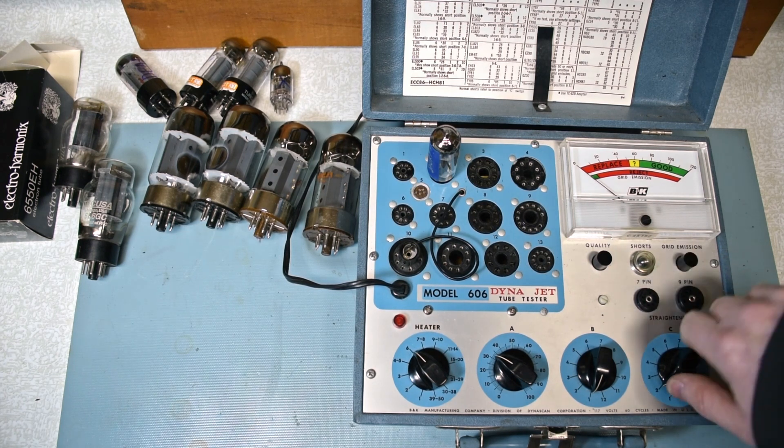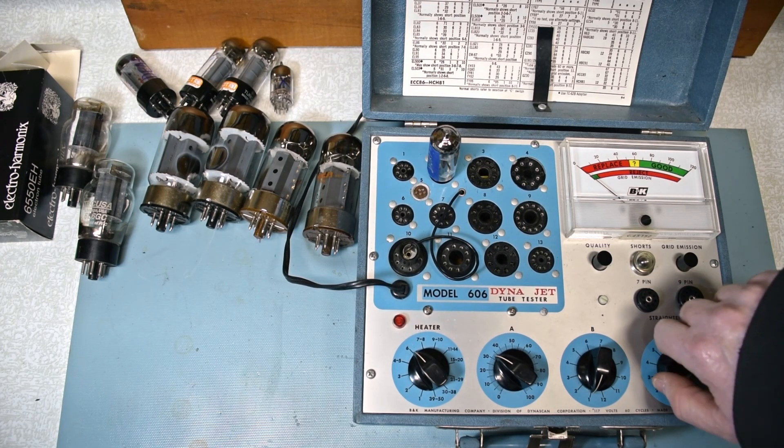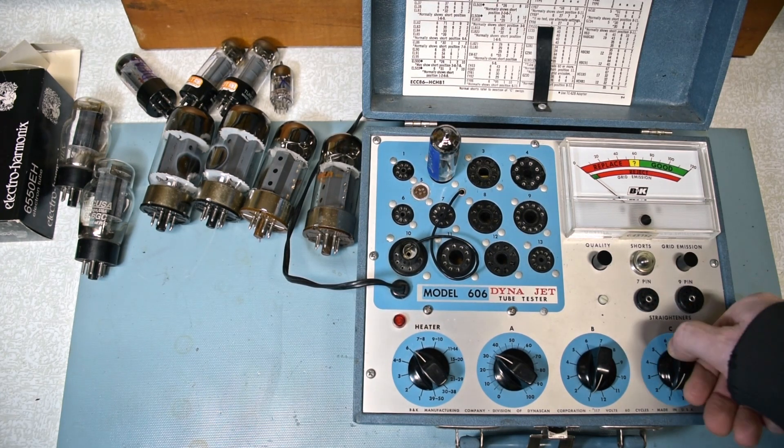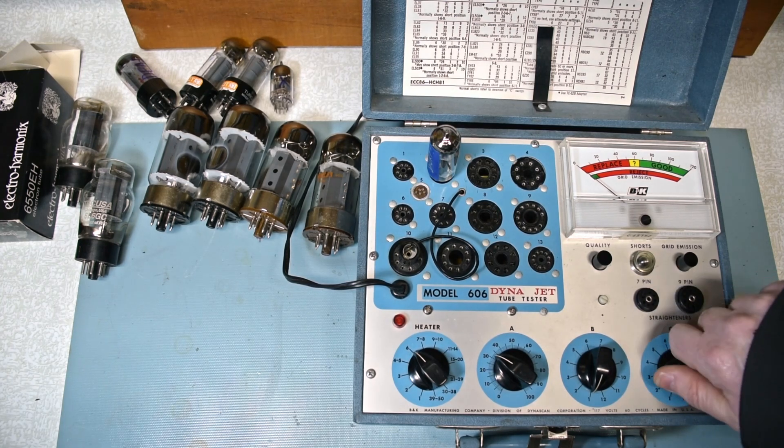So here it's showing good. Grid emissions. Let's see if it shows the short. Blinked there, but that was between positions.